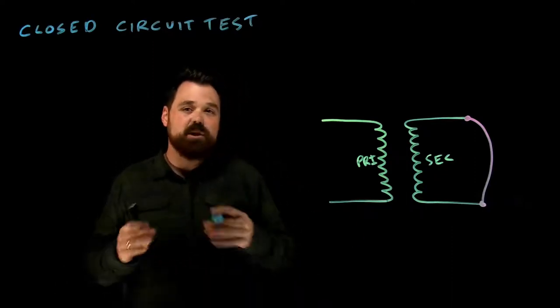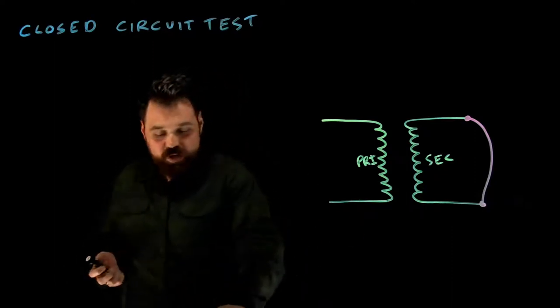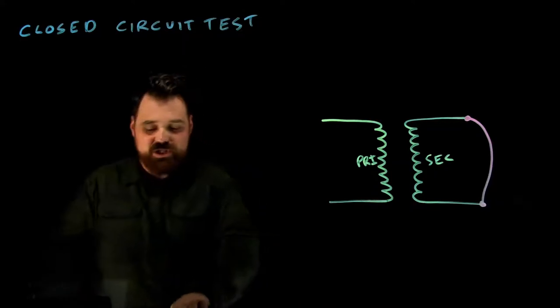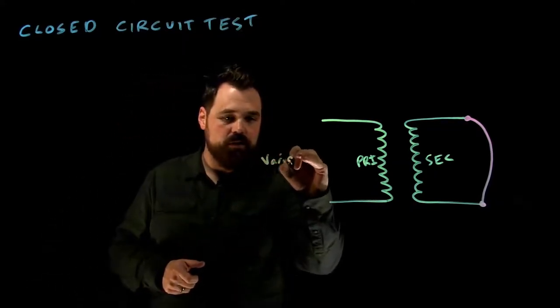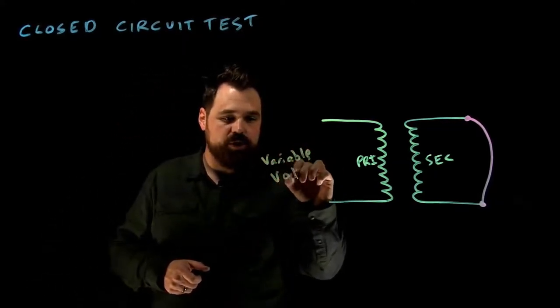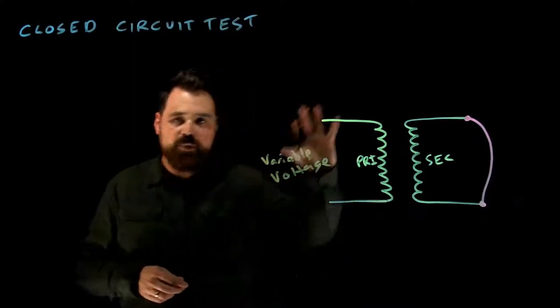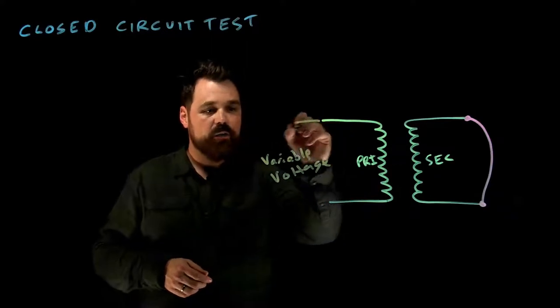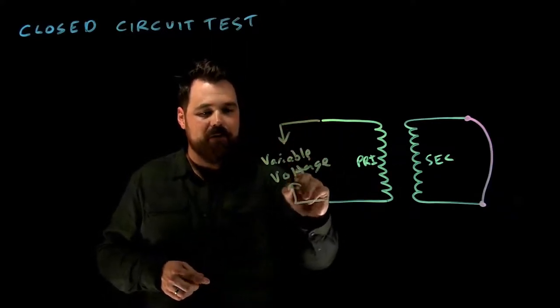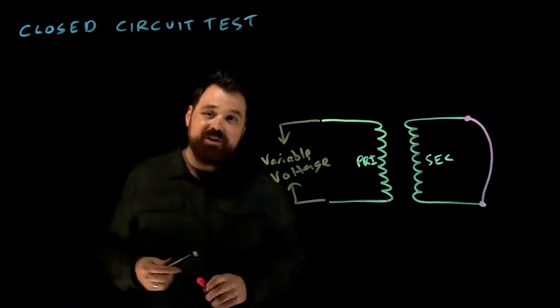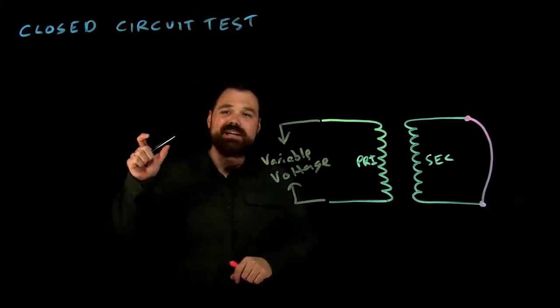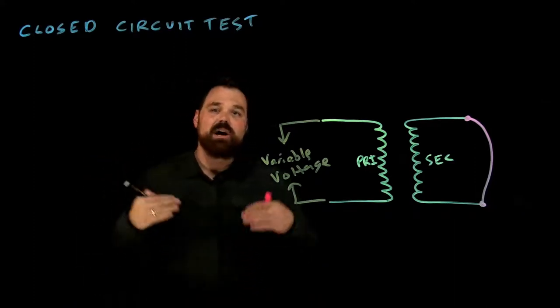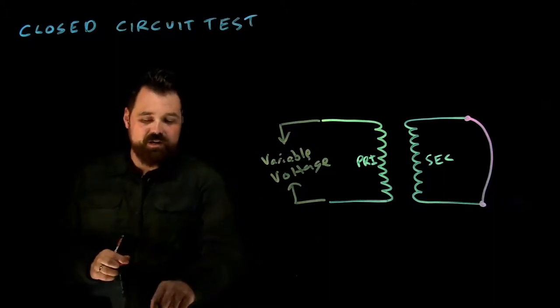What we're going to do with this closed circuit test is energize the circuit with a variable voltage. So we've closed-circuited the secondary, we've short-circuited the secondary, and we're going to connect up a variable voltage supply. We're going to slowly increase the voltage until we reach rated secondary current.